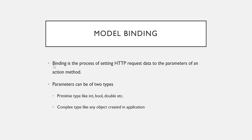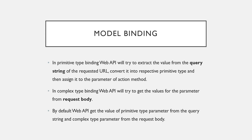Your parameters can be of two types: first is primitive type — normal variables like integer, double, float — and complex type, like any object or class you have created in your application. In primitive type binding, the Web API will try to extract values from the query string, convert them to the respective primitive type, and assign them to your action method parameters. For complex type binding, you have to mention your values in the request body.